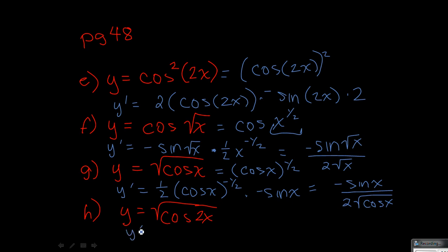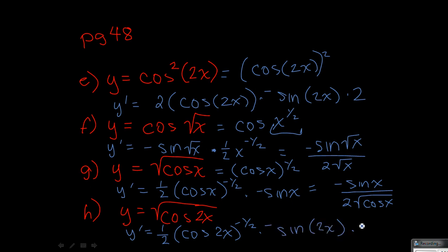On the last one, we're going to have the same thing — this 1 half comes out front, and now it's to the negative 1 half power. Then we do the derivative of the inside, which is negative sine of 2x, and then the derivative of the inside of that, which is 2. So this 2 and this 1 half would cancel. You could simplify this down to negative sine of 2x over the square root of cosine of 2x.